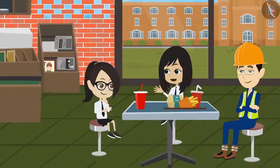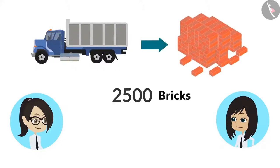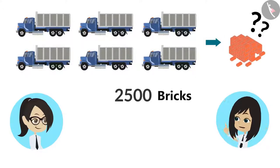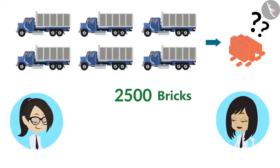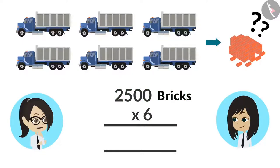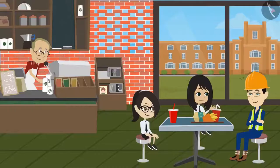Now I understand — we can count the total number of bricks. How? It is very easy. One truck has 2500 bricks, so to calculate the total number of bricks, multiply 2500 by 6. If we multiply 2500 by 6, our answer will be 15,000. This means that in building this canteen, 15,000 bricks were used.